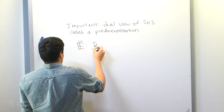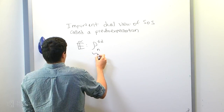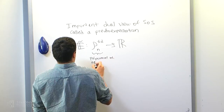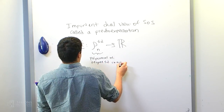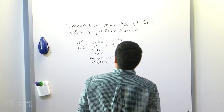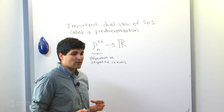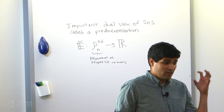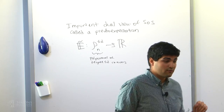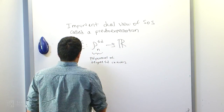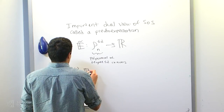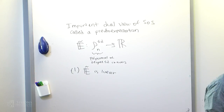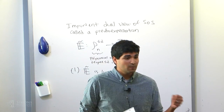A pseudo-expectation is something that masquerades as an expectation but isn't — it only has some of the consistency checks. We think about an operator that takes any polynomial of degree at most d in n variables and maps it to some real value. The expectation is something that could do that: given a distribution over variables x1 through xn, you could compute the expectation of any polynomial. The pseudo-expectation will act like that and have many of the same properties. For example, ẽ is going to be linear — if you give me two polynomials p and q, then ẽ(p + q) must equal ẽ(p) + ẽ(q).